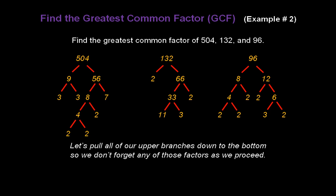Now, let's pull all of our upper branches down to the bottom so we don't forget any of those factors as we proceed to find the greatest common factor. So I've got a 3 I can pull down in the 504 tree, another 3 can come down, a 2 can come down as well as a 7. In the 132 tree, I've got a 2 that needs to come down and another 2. And in the 96 tree, I have two 2's that need to come down to the lower level.